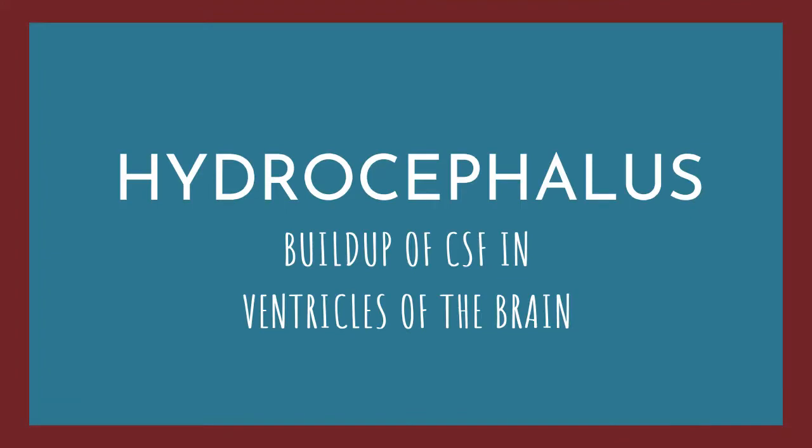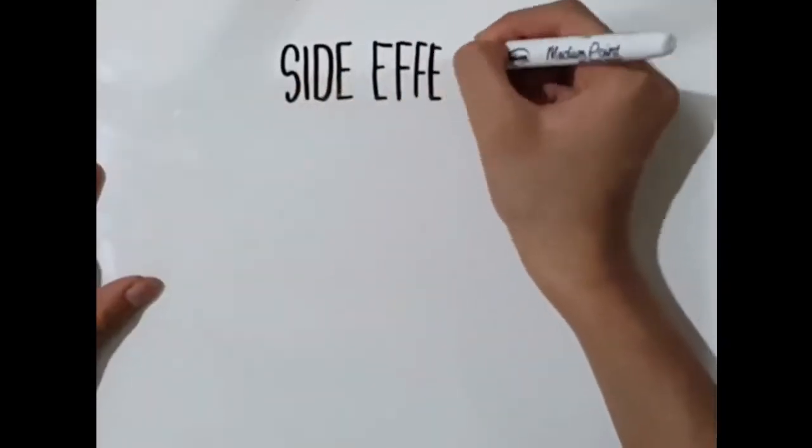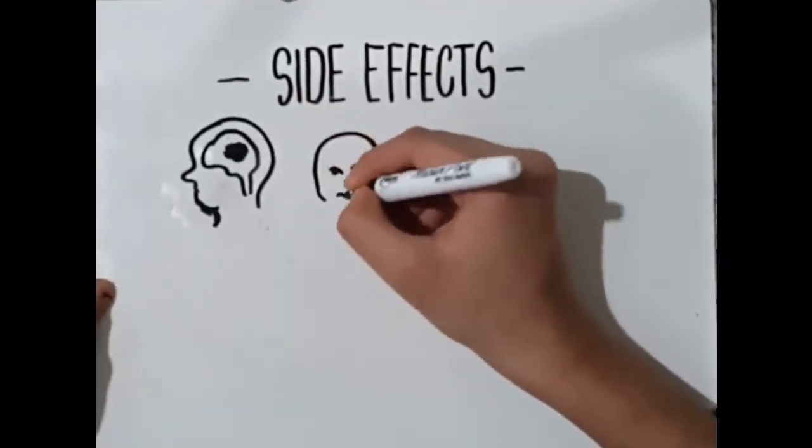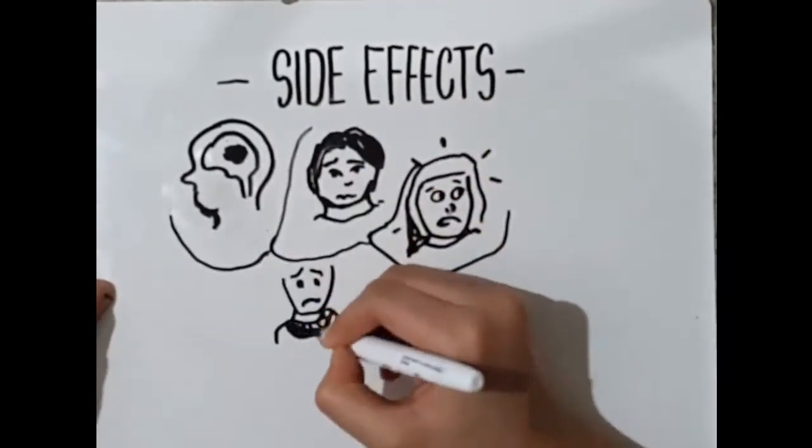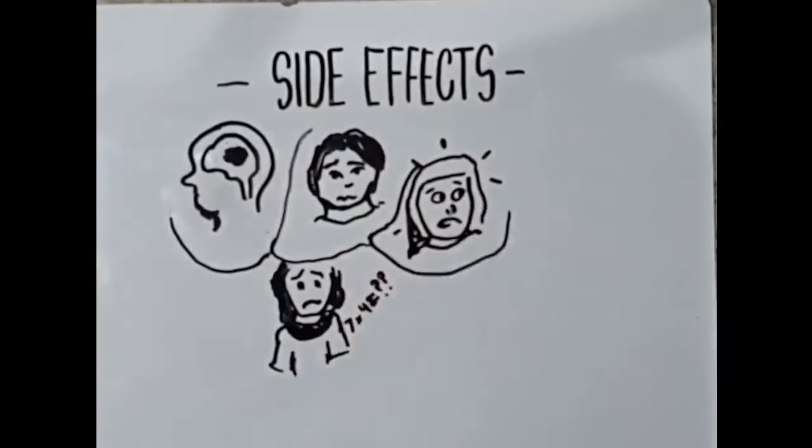Hydrocephalus is the buildup of CSF in the ventricles of the brain. Side effects include head enlargement in infants, blurry eyes, headaches, and cognitive difficulties. Sadly, one out of every 770 babies develop hydrocephalus.